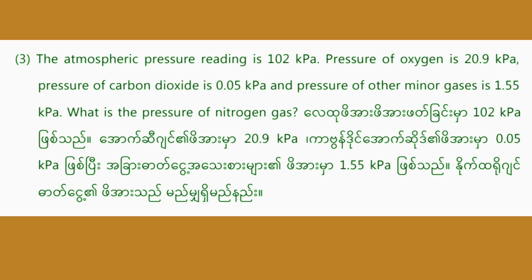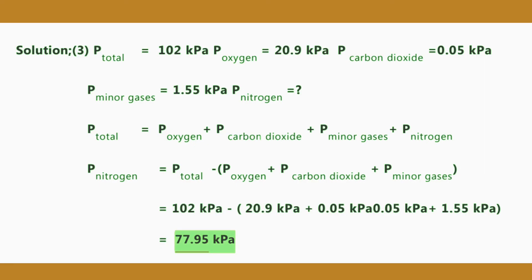Number 3. The atmospheric pressure reading is 102 kPa. Pressure of oxygen is 20.9 kPa. Pressure of carbon dioxide is 0.05 kPa. Using Dalton's Law, P-nitrogen equals P-total minus the sum of the other partial pressures, which gives 77.95 kPa.